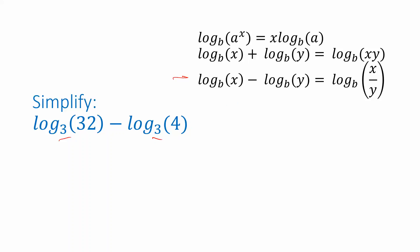That matches up with the property: log base b of x minus log base b of y. They both have the same base and we're subtracting the two logarithms. That's equivalent to taking the quotient — the argument of the first logarithm divided by the argument of the second — and taking a single logarithm of that fraction. So 32 is our x and 4 is our y, matching this form.